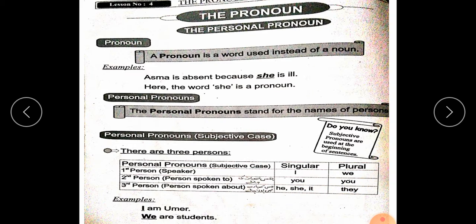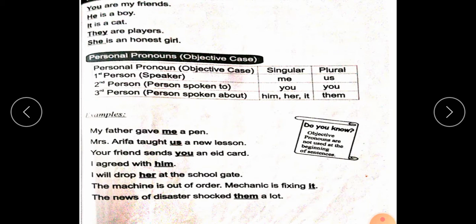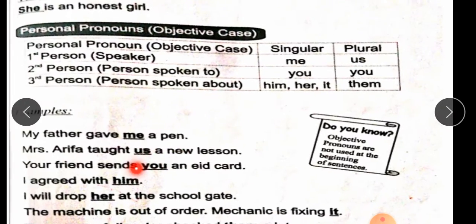For example: I am Umar. We are students. — These are first person pronouns. You are my friend. You are my friends. He is a boy. It is a cat. They are players. She is an honest girl.